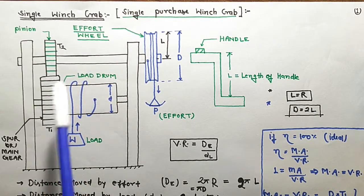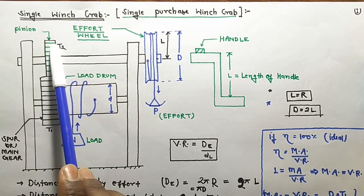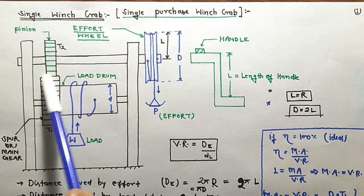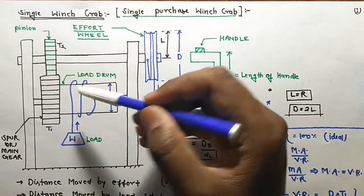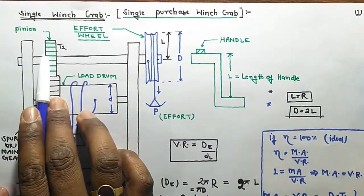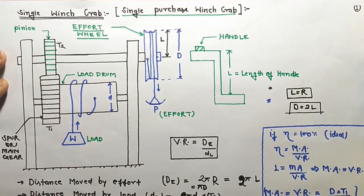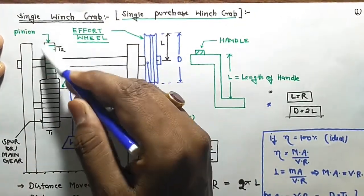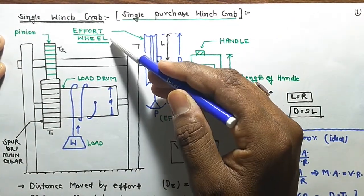The number of teeth on the pinion will be minimum. The pinion is smaller, so its circumference is less. The number of teeth is proportional to circumference — the larger gear has more teeth and a larger circumference. This is the spur gear arrangement: the large spur gear meshes with the small pinion. This pinion is on the effort axle, also called the effort shaft.